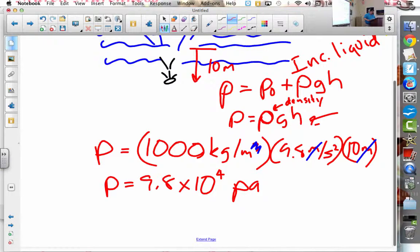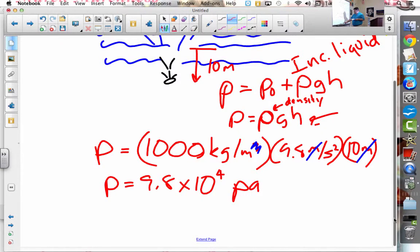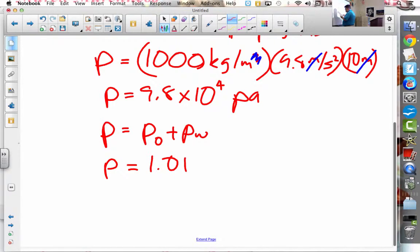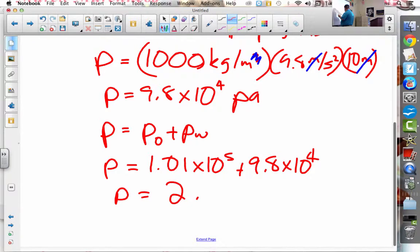Now for part B, it says what is the absolute pressure at that depth? Now absolute pressure is a little bit different. It's the initial pressure plus the pressure due to water. So that would be something like this. It would be P is equal to P₀ plus ρgh, which is what we just found. And P₀ would be atmospheric pressure, which is like 1.01 times 10 to the 5th plus this 9.8 times 10 to the 4th. And then if you add all those up, approximately, it's about 2.0 times 10 to the 5th, approximately. Because this is like 0.98, so it's really like 1.99 times 10 to the 5th.